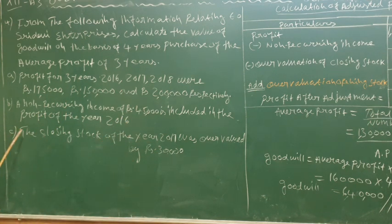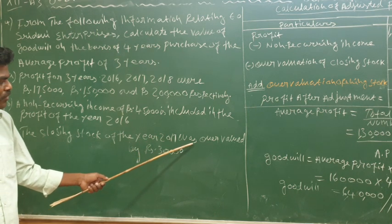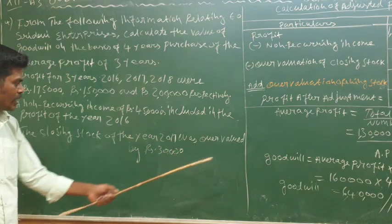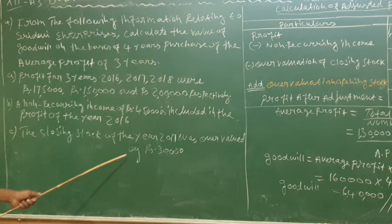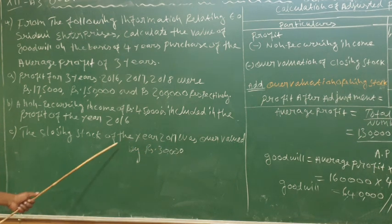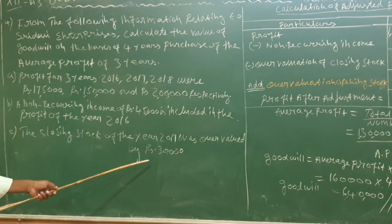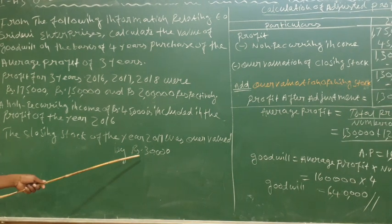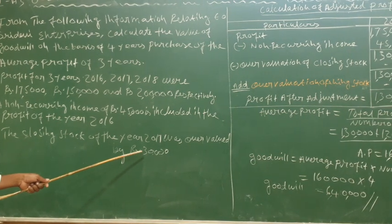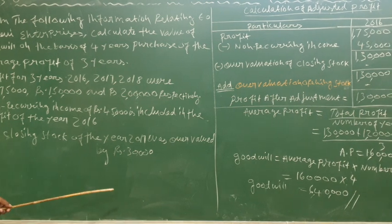The closing stock of the year 2017 was overvalued by Rs. 30,000. Since the closing stock of 2017 is overvalued by Rs. 30,000, the profit for 2017 must be reduced by Rs. 30,000.